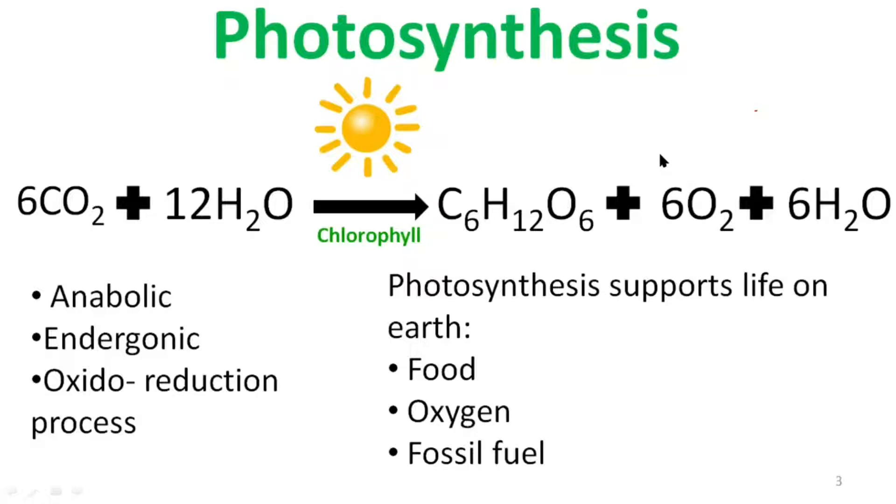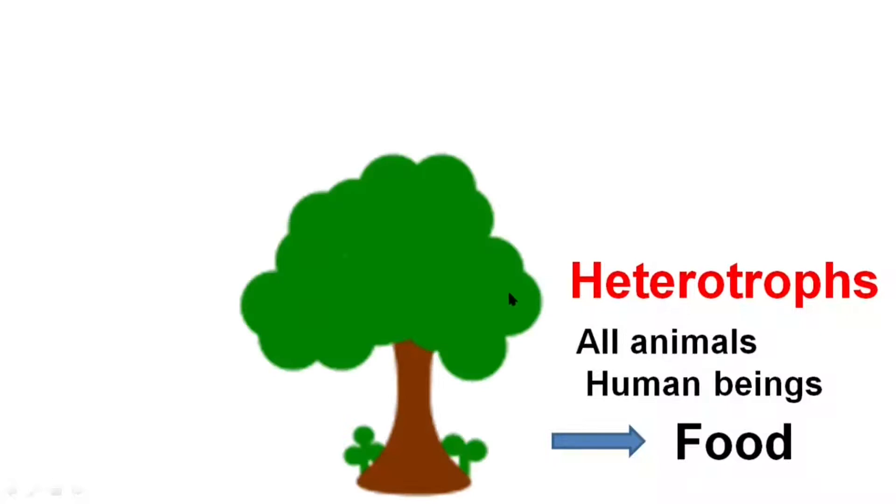The slide that you are seeing here is a summary slide which you can download using the link given in the description. All organisms on this earth require energy to do various functions. In order to breathe itself we require lots of energy. When animals, including human beings, need energy we take food, but the food that we take is not synthesized by us. Since we cannot synthesize our own food, all animals including us are known as heterotrophs — hetero means different or other — that is, we are dependent on other organisms for our food. We are directly or indirectly dependent on plants for our food.